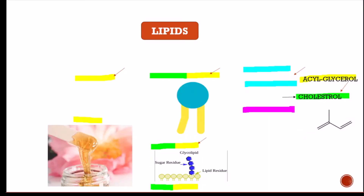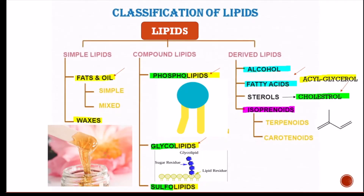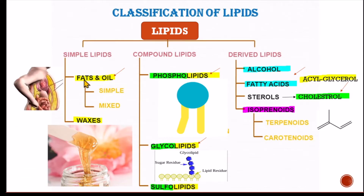Next is the classification of lipids. We classify lipids as simple lipids, compound lipids, and derived lipids. Simple lipids include fats and oils. Fat has an animal source, present in animals like beef and mutton. Oil is a plant source, used in pulses and beans, and is liquid in nature.